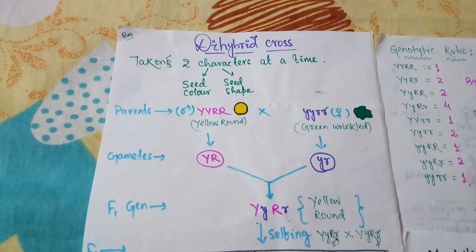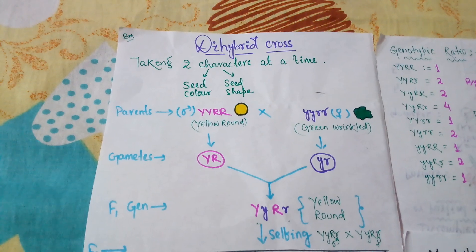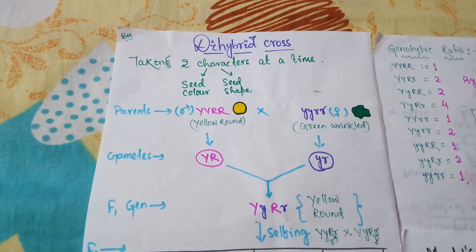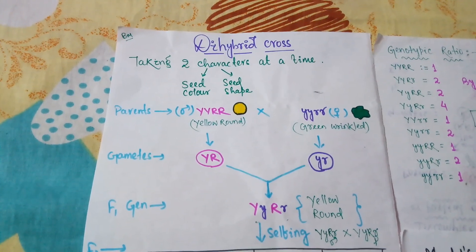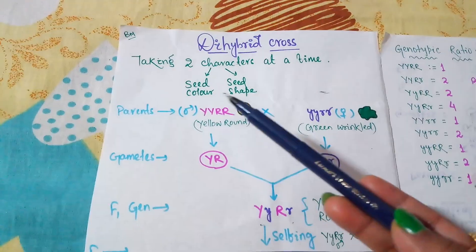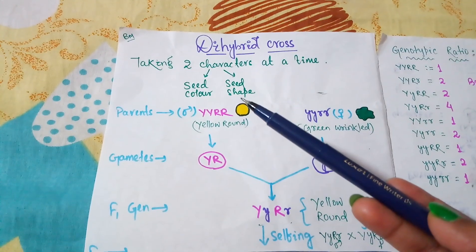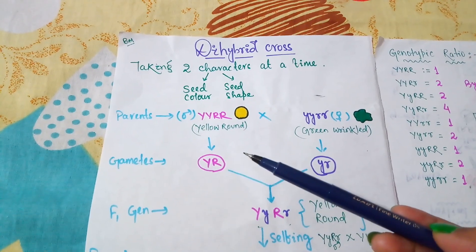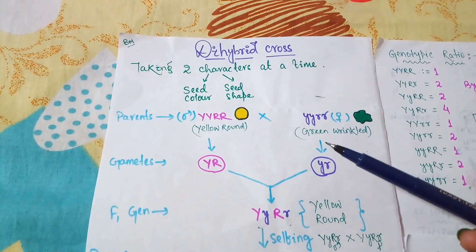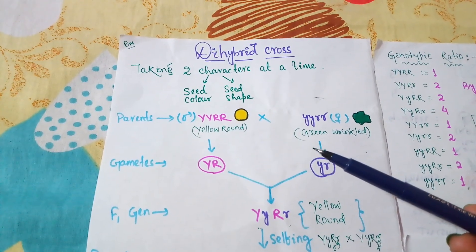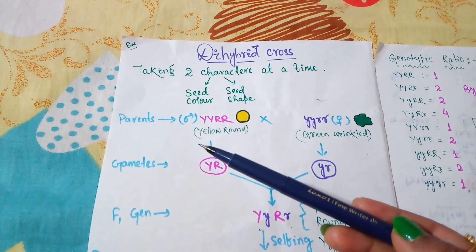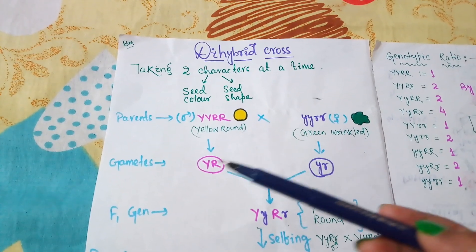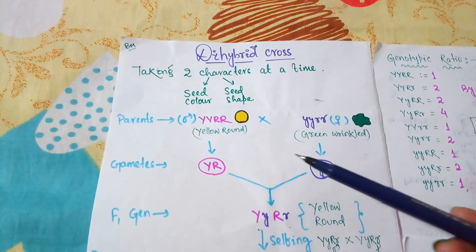As the name suggests, 'di' means two, so in a dihybrid cross two pairs of contrasting characters are taken into consideration. These characters are the color of the seed and the shape of the seed. Mendel crossed the pure dominant parent with the pure recessive parent. Here you can notice that yellow color is dominant over green color, and roundness is dominant over wrinkleness.